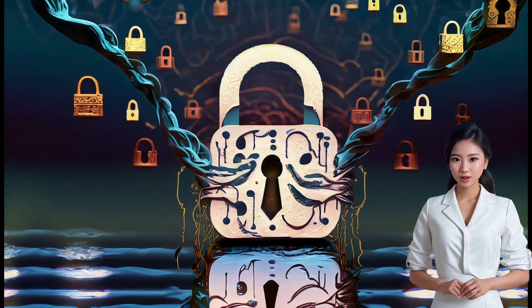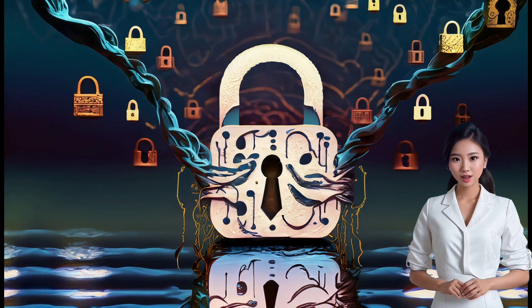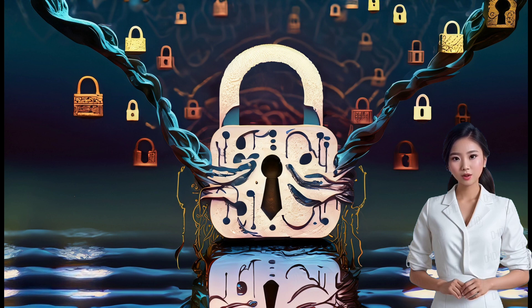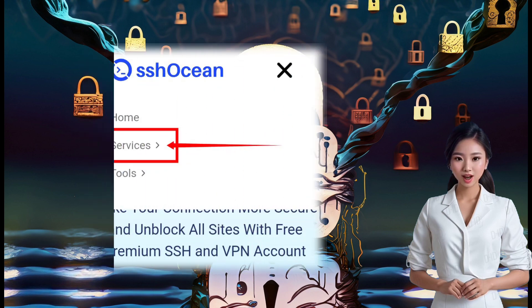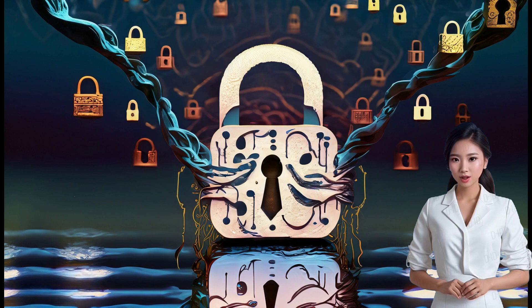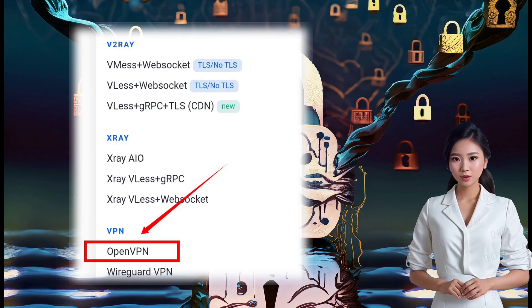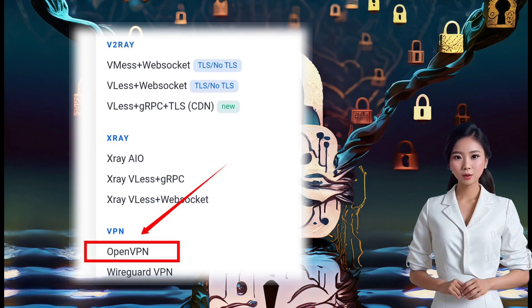Step 2. Next, let's access the OpenVPN services. Click on the Services label from the menu options, then scroll down until you find the OpenVPN label and click on it to proceed.